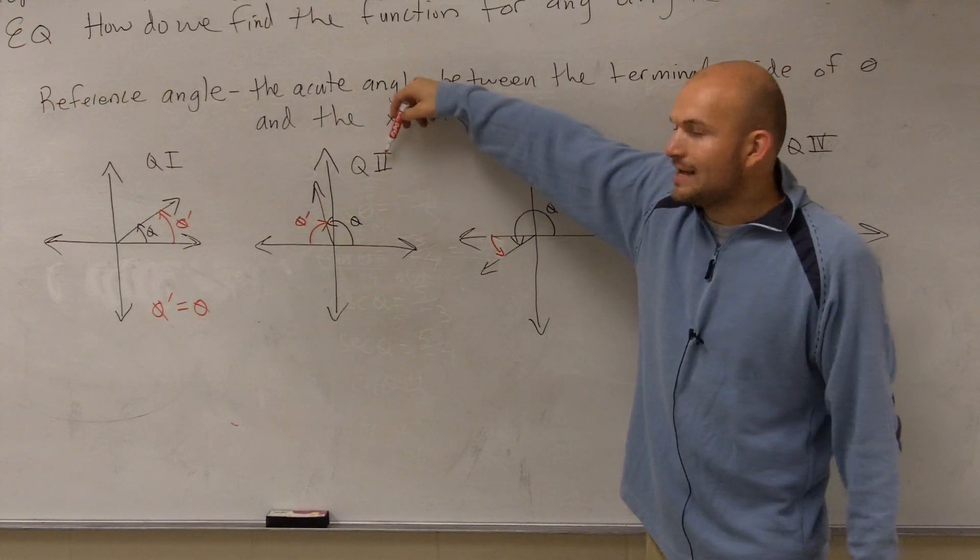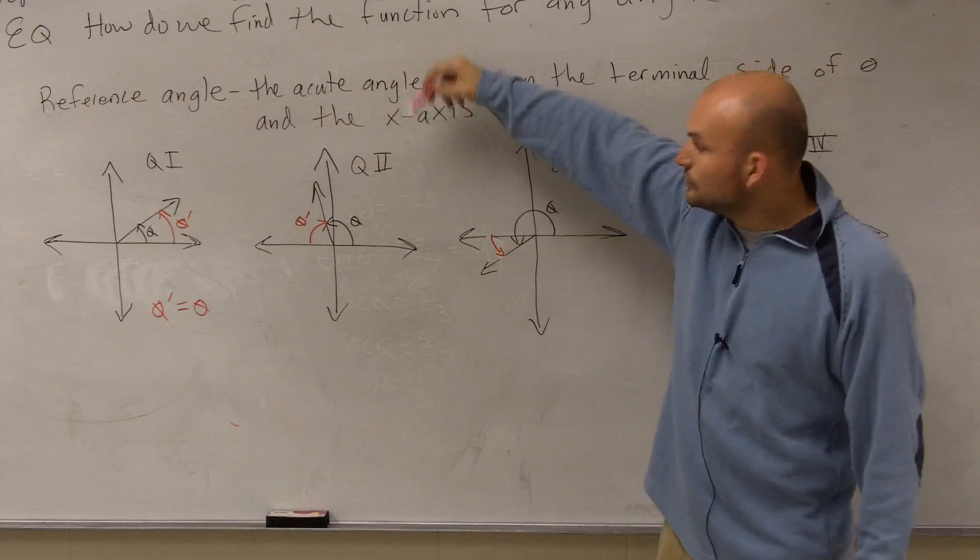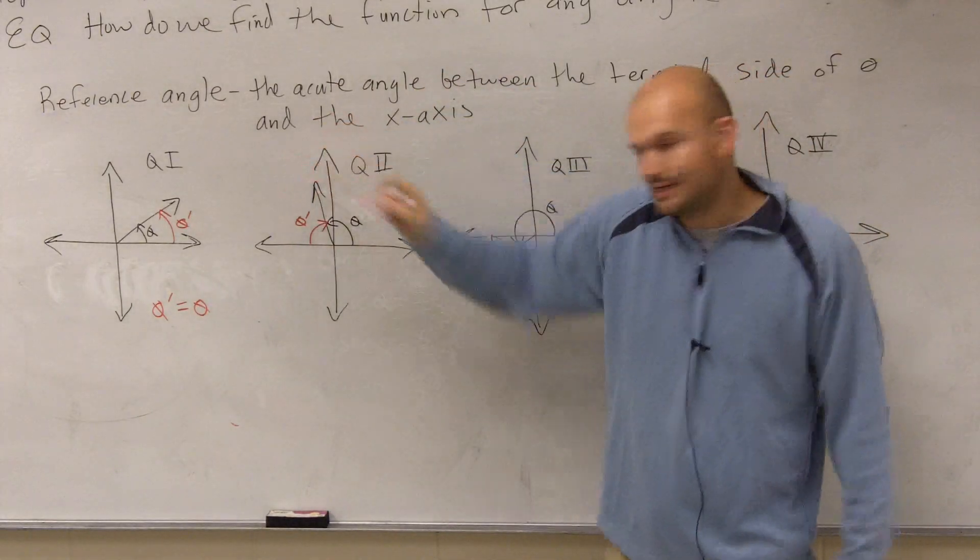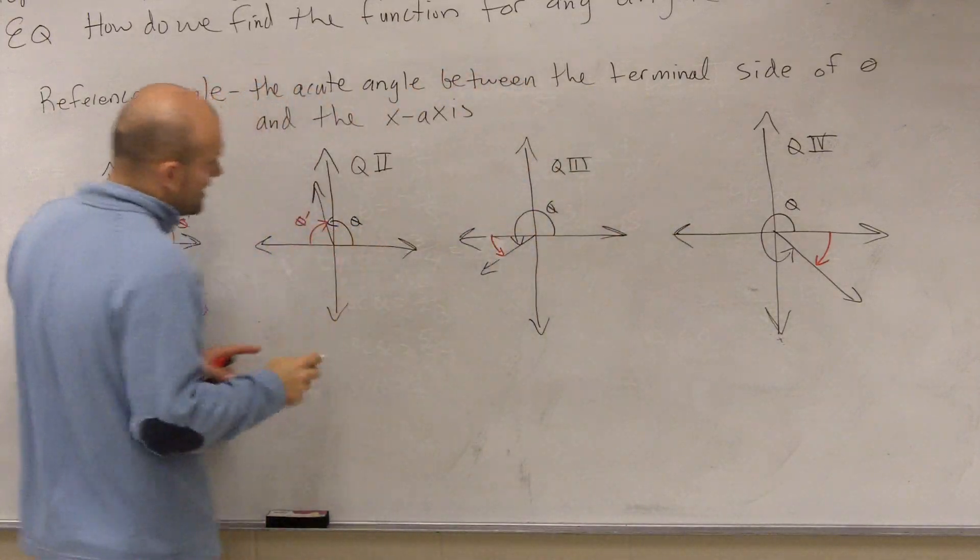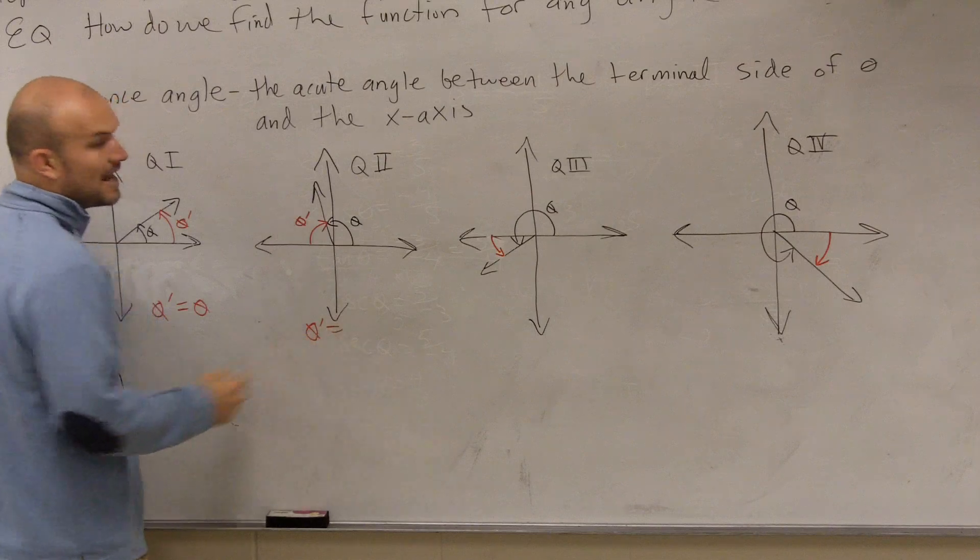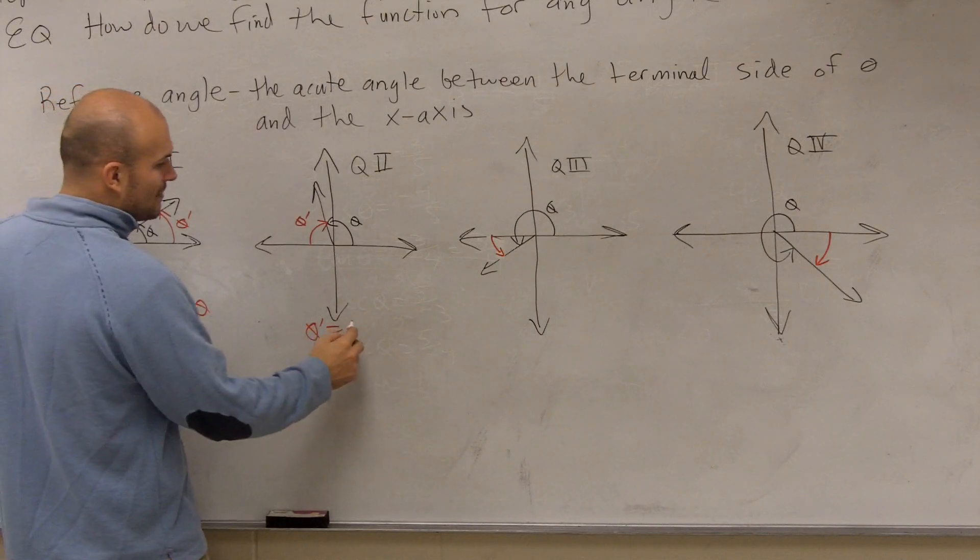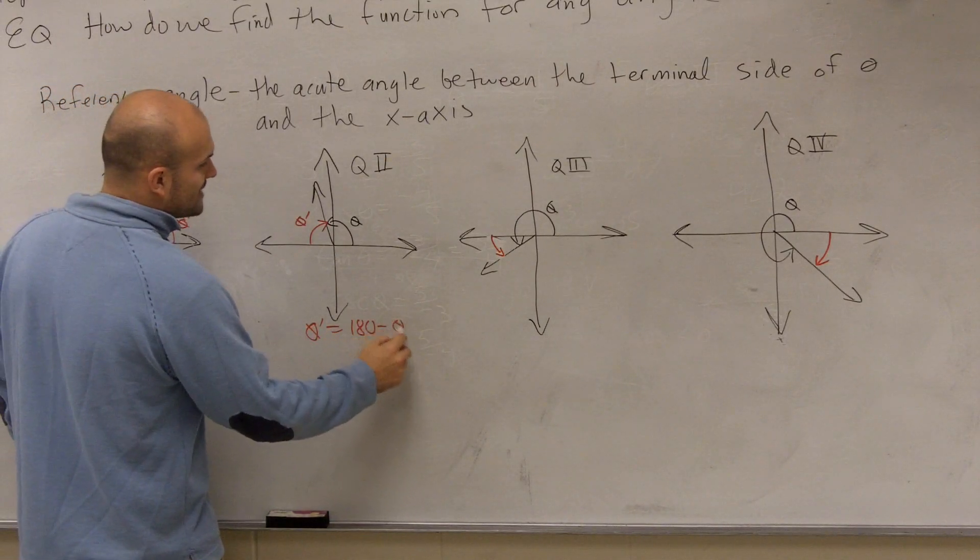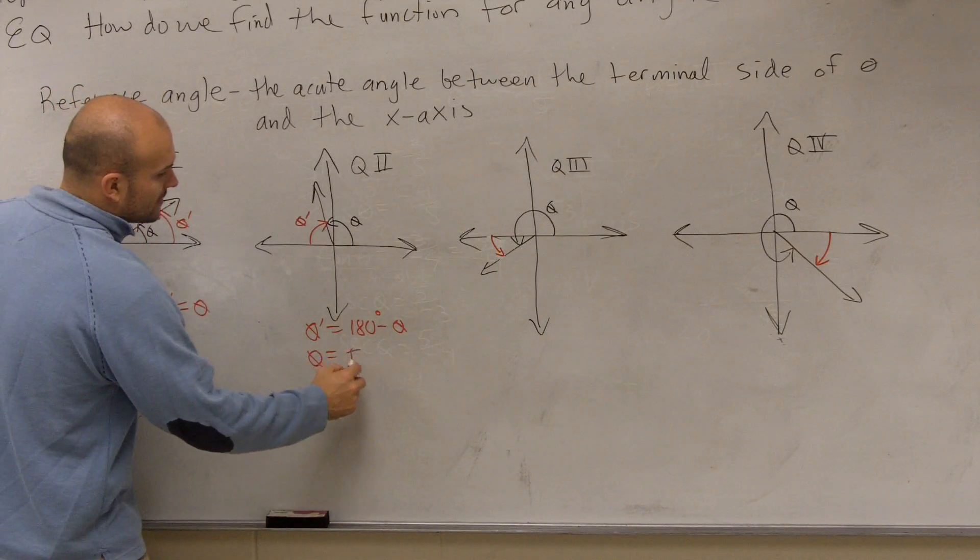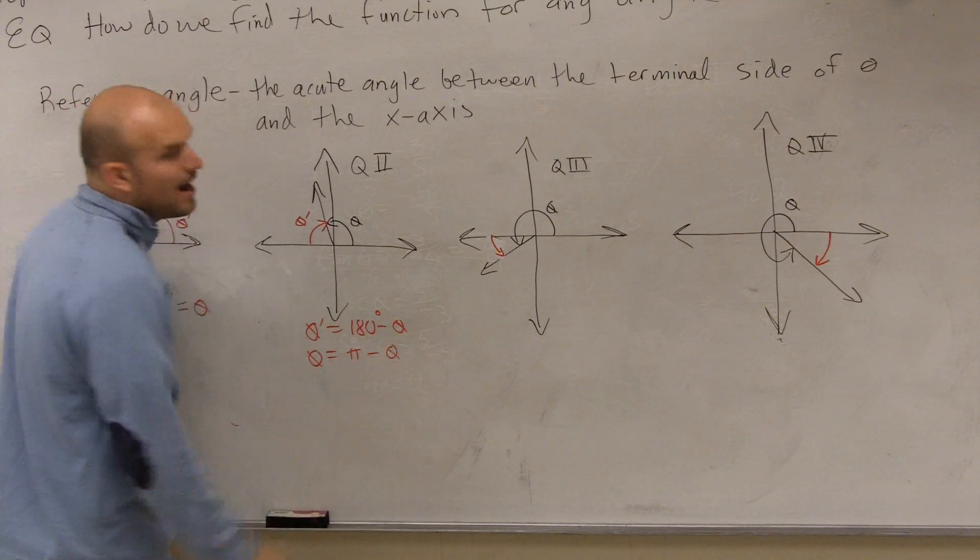However, if I give you an angle in the second quadrant, you notice that these two add up to what degree, to what measure? 180. So if I give you theta and I say find theta prime, you could say theta prime—since they add up to 180—theta prime, all it is is 180 minus theta. If I gave you degrees, or if I gave you radians, it'd be pi minus theta.